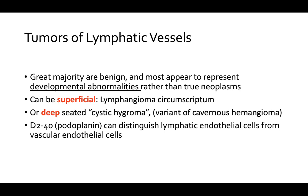Moving to lymphatic malformations: the great majority of tumors of lymphatic vessels are benign and most appear to represent developmental abnormalities rather than true neoplasms. Malformations result from impaired development rather than neogenesis. They can be superficial — as in lymphangioma circumscriptum — or deep-seated, as in cystic hygroma. D2-40, also known as podoplanin, is the marker you need to know for your exam; it can help distinguish lymphatic endothelial cells from vascular endothelial cells.